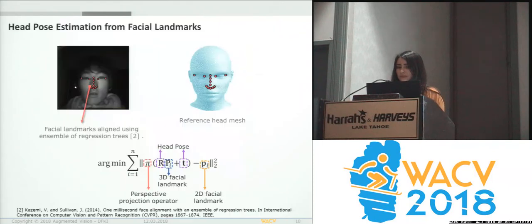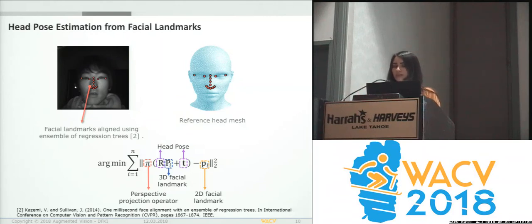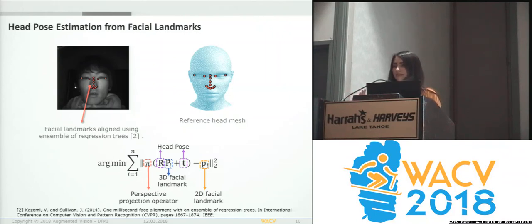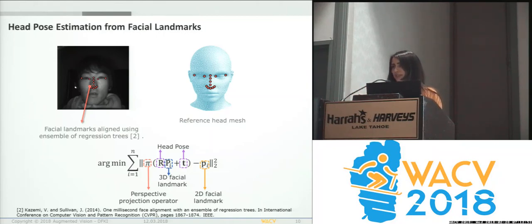For the facial landmarks, to estimate head pose first we have to align the 2D facial landmarks on the 2D image using an ensemble of regression trees. We use a reference head mesh to have the 3D head points. This reference head mesh is adjusted to the user's face. Again, we minimize the reprojection error from 3D to the correspondences to estimate the head pose, and here the head pose is not estimated frame by frame but with respect to the initial frame.